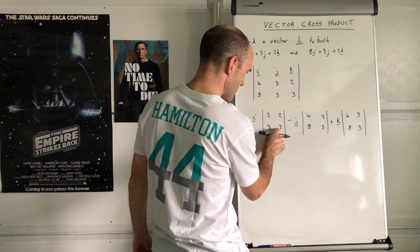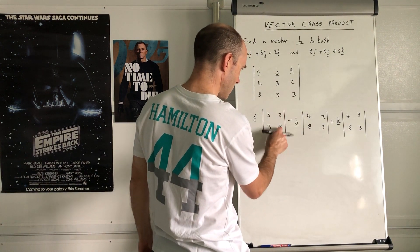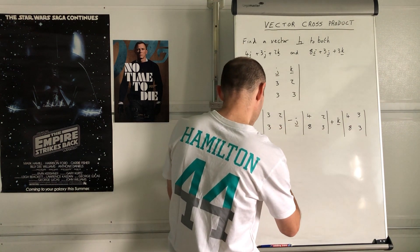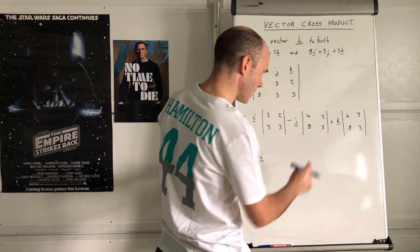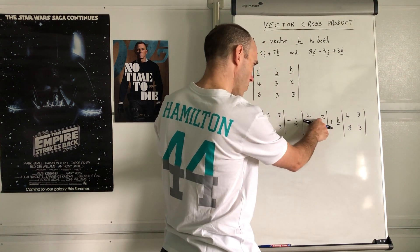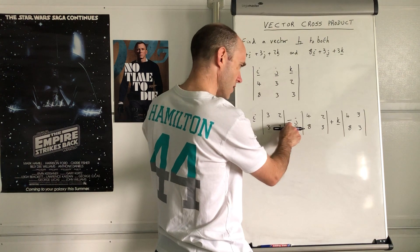Nine subtract six which is three. See how quick that was? 3i, then you got 12 subtract 16 which is negative 4, so negative 4 times negative j, that's positive 4j.